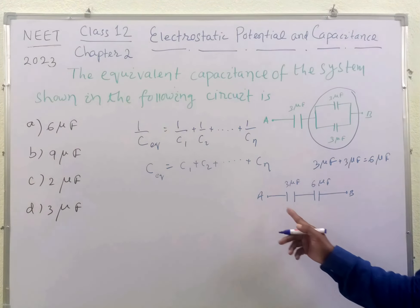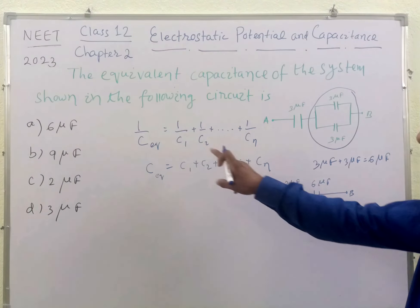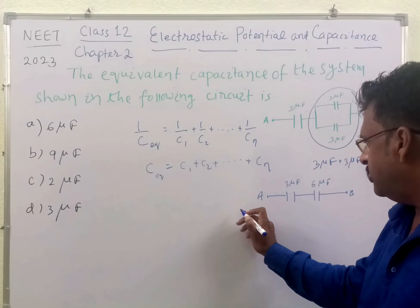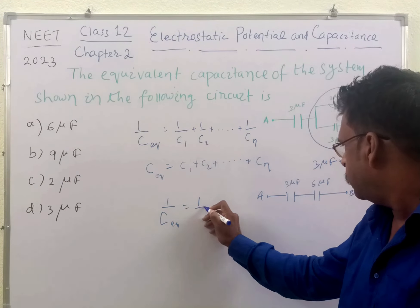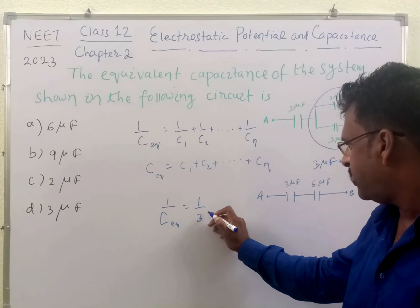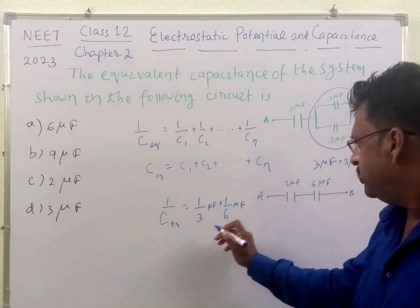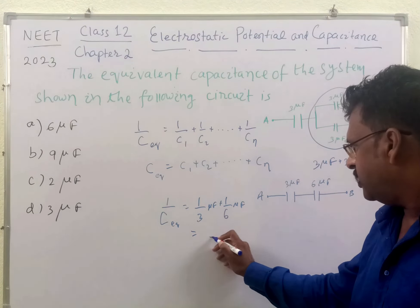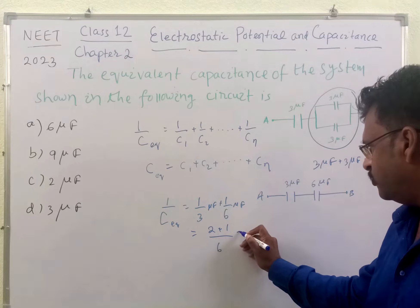Now equivalent capacitance, these two are in series, so we will apply this formula. That is 1 by C equivalent will be equal to 1 by 3 micro Farad plus 1 by 6 micro Farad. So this is 2 plus 1, which is 3 by 6 micro Farad.